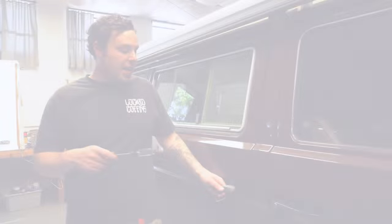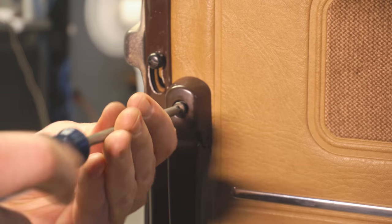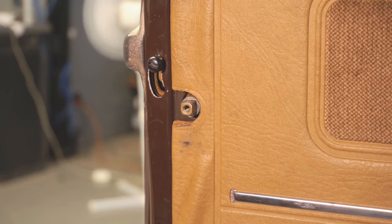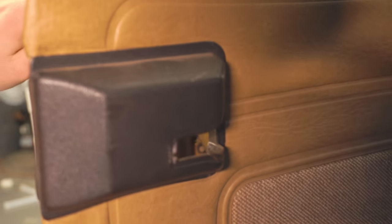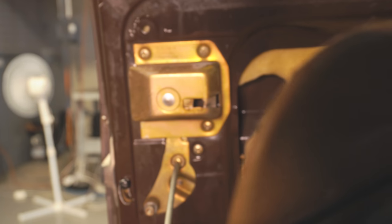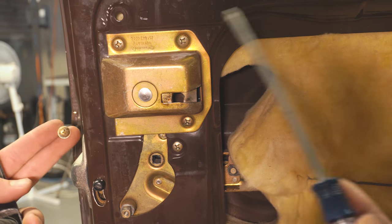So the first thing we're going to want to do is go inside and pop the interior handle off and a part of our slider. We don't need to remove this panel all the way, we just need to remove it enough that we can access this screw right here. This is what holds the outer handle into the van.